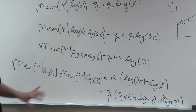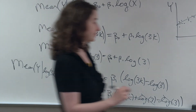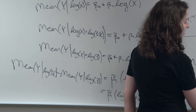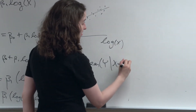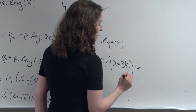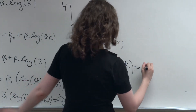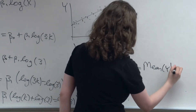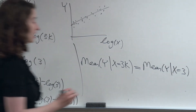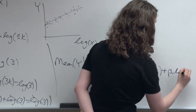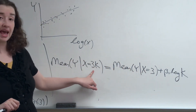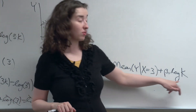Let me write that again, and I'm going to add this quantity to both sides to make it even more clear. So what I've got is that the mean of y, given that x is equal to 3 times k — which is the same as saying the log of x equals the log of 3k — is equal to the mean of y given that x is just equal to 3, which is the same as saying the log of x equals the log of 3, plus beta 1 log k. So the statement we've ended up with: when x is multiplied by k, the mean of y increases by beta 1 log k.